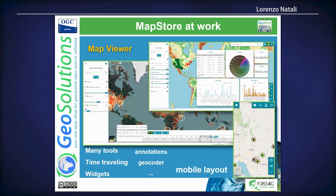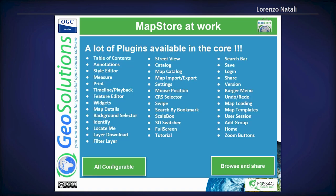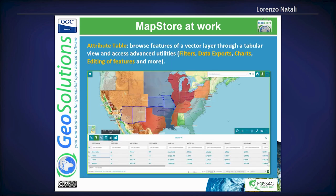The main component of MapStore is the map viewer, which has a lot of tools ready to be used — for time travelling with time dimension data, for annotations, for geocoding, and it also has a mobile layout that renders the same interface in a smaller layout. We have a lot of plugins in the core that you can use all or only part of, depending on your needs. They are all configurable, and the list of them is too long to display in this presentation.